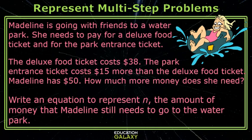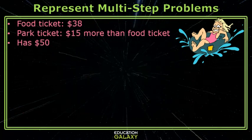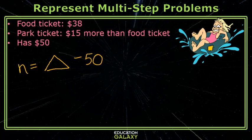Let's try another one. Madeleine is going with friends to a water park. She needs to pay for a deluxe food ticket and for the park entrance ticket. The deluxe food ticket costs $38. The park entrance ticket costs $15 more than the deluxe food ticket. Madeleine has $50. How much more money does she need? Write an equation to represent n, the amount of money that Madeleine still needs to go to the water park. If I knew the total amount of money that Madeleine needed, I could subtract $50 since she has that already, and that would tell me how much money she still needs.